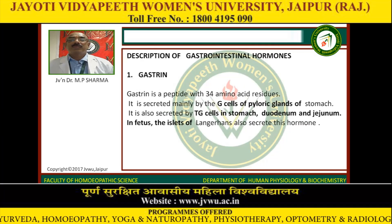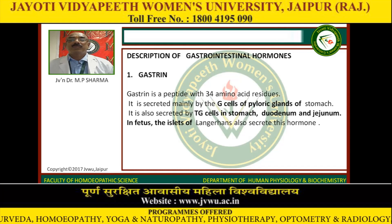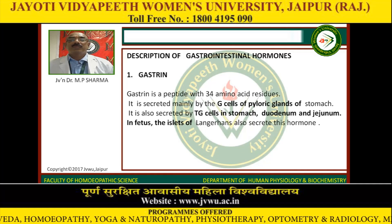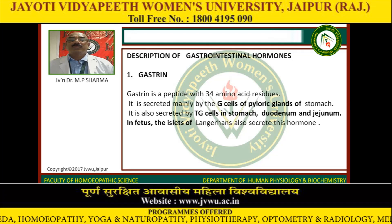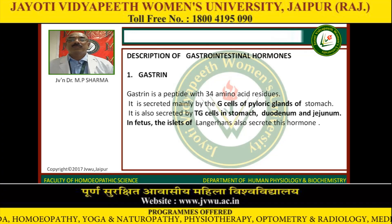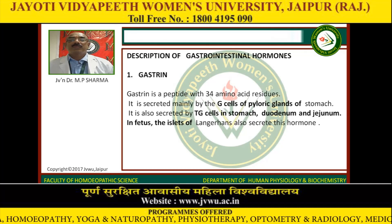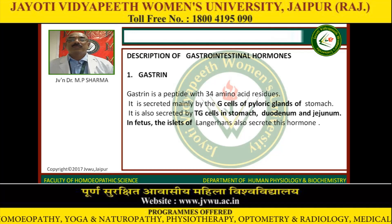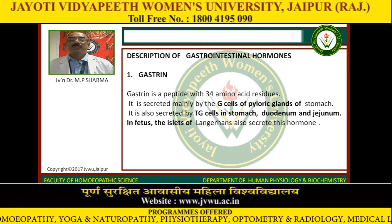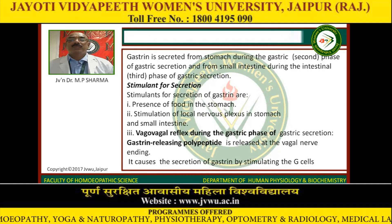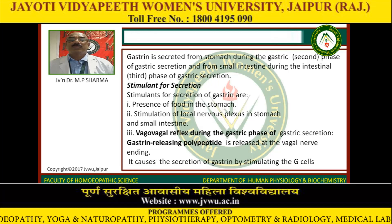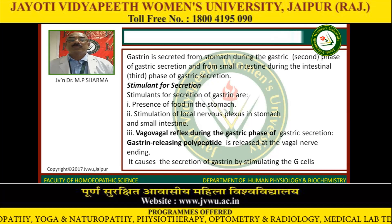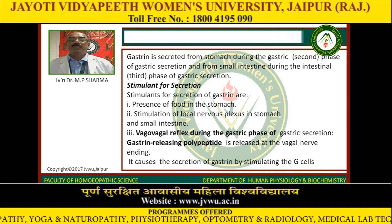Gastrointestinal hormone number 1: Gastrin. Gastrin is a peptide with 34 amino acid residues. It is secreted mainly by the G cells of the pyloric glands of the stomach, and also by TG cells in the stomach, duodenum, and jejunum. In the fetus, the islets of Langerhans also secrete this hormone. It is secreted from the stomach during the gastric second phase of gastric secretion, and from the small intestine during the intestinal third phase of gastric secretion.